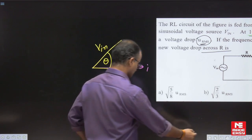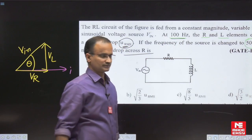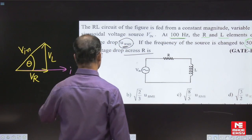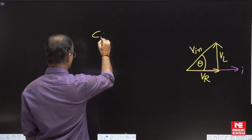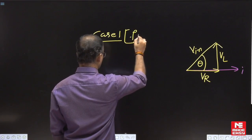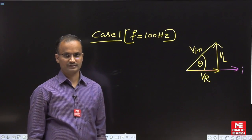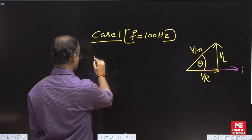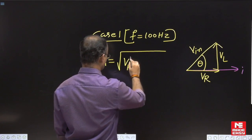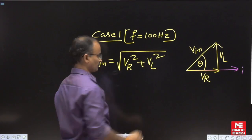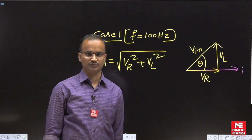Now come to Case 1. According to the given information, initially the frequency is 100 Hz. From the phasor diagram, if I write the voltage relations: Vr² + VL² = Vin². In the question, it is stated that Vr and VL are both exactly equal, and both are equal to URMS.